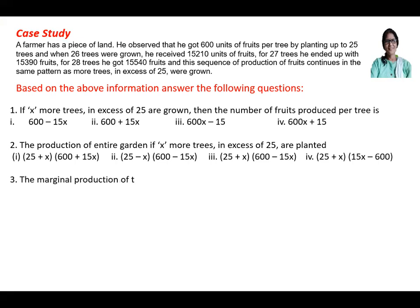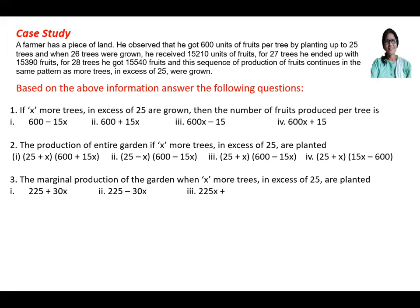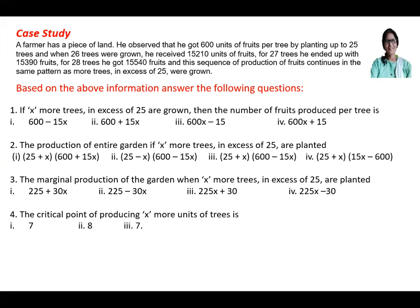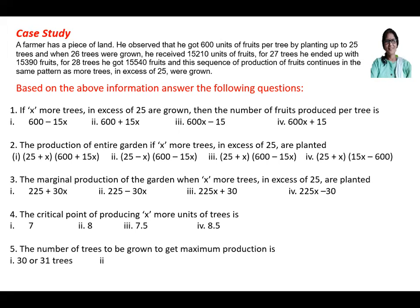Question three: the marginal production of the garden when x more trees in excess of 25 are planted will be: (a) 225+30x, (b) 225−30x, (c) 225+30, (d) 25x−100. Question four: the critical point of producing x more units of trees is: (a) 7, (b) 8, (c) 7.5, (d) 8.5. Question five: the number of trees to be grown to get maximum production is: (a) 30 or 31, (b) 32 or 33, (c) 33 or 34, (d) 34 or 35.